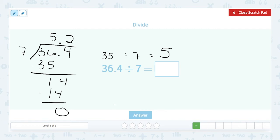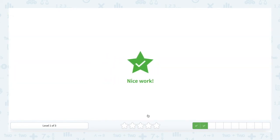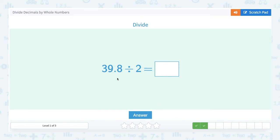So 5.2 is my answer and if I go back over here and look at what my estimate was, I estimated 5. 5.2 is very close to 5, so I can be pretty confident here that I've done this correctly. Let's go ahead and check our work. 5.2, sure enough is correct. Okay, let's look at this one.